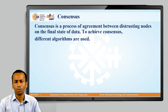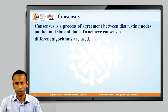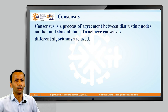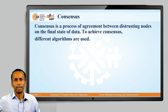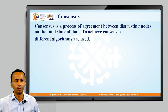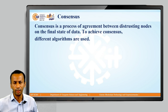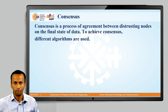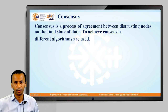Consensus is the process of agreement between the distributed nodes on the final state of the data. To achieve consensus, different algorithms are used. If each and every distributed node in that network agrees on the final state of the data, then consensus is achieved among the multiple nodes, and that transaction is confirmed and recorded permanently into the distributed database.